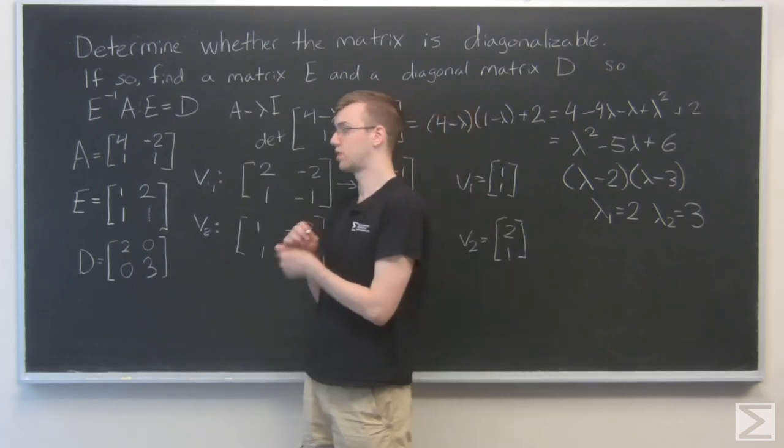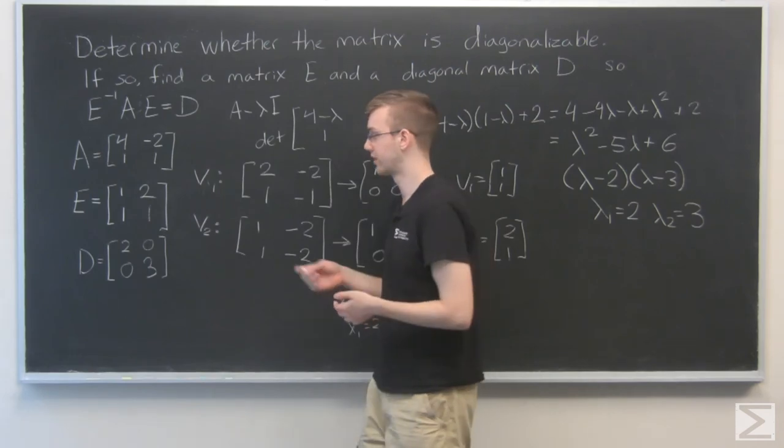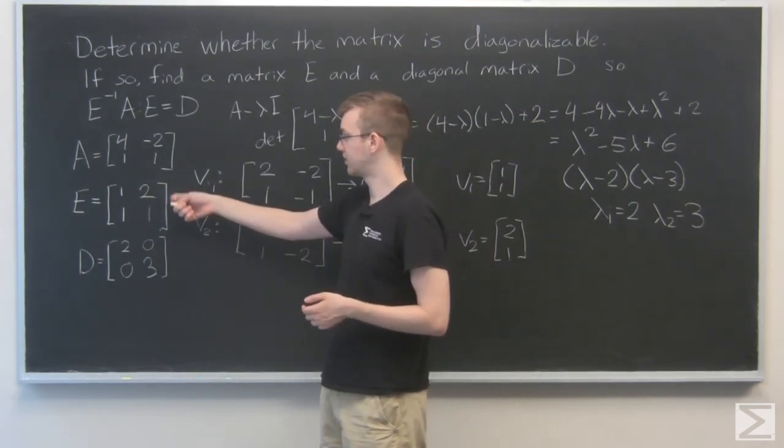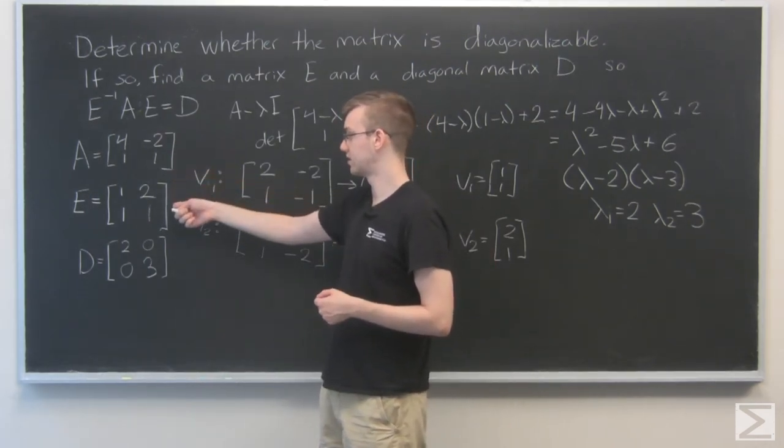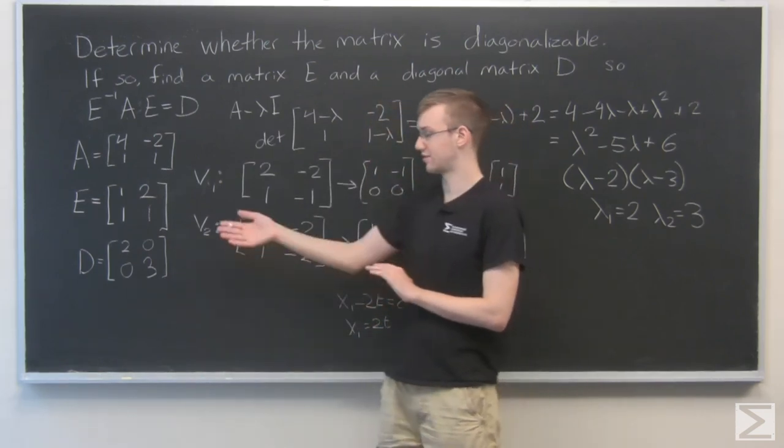So those are our two matrices. You can try it for yourself by plugging it back in. You can do it by hand or on a calculator. Just E inverse times A times E, and you're going to get this result. So that's the solution for our problem.